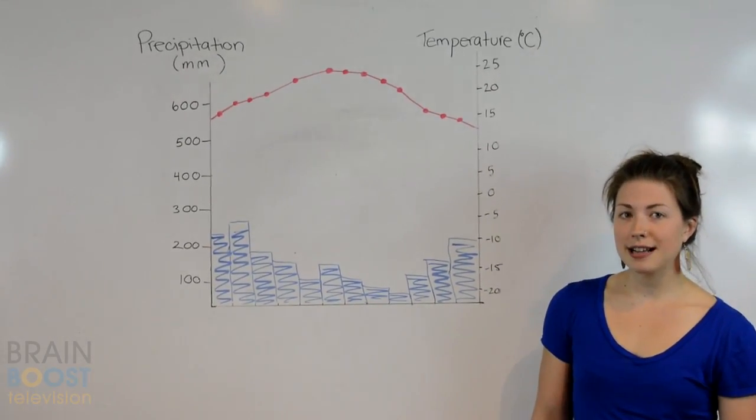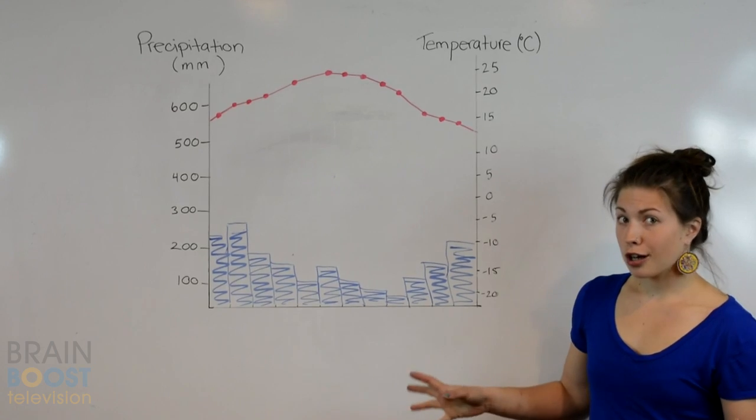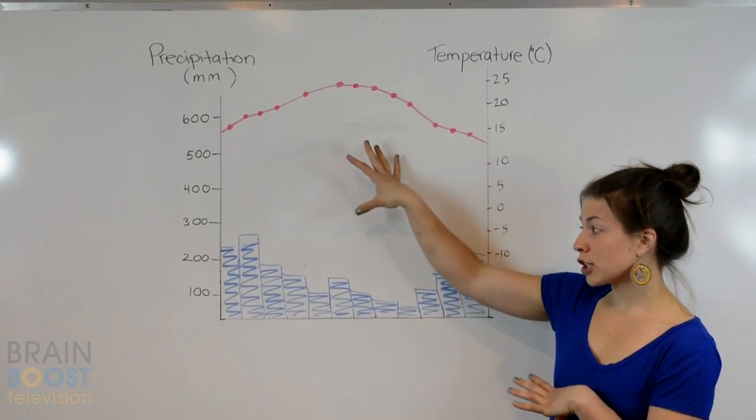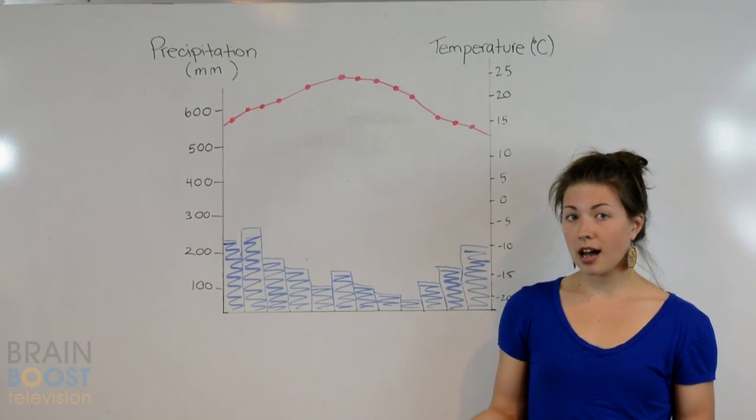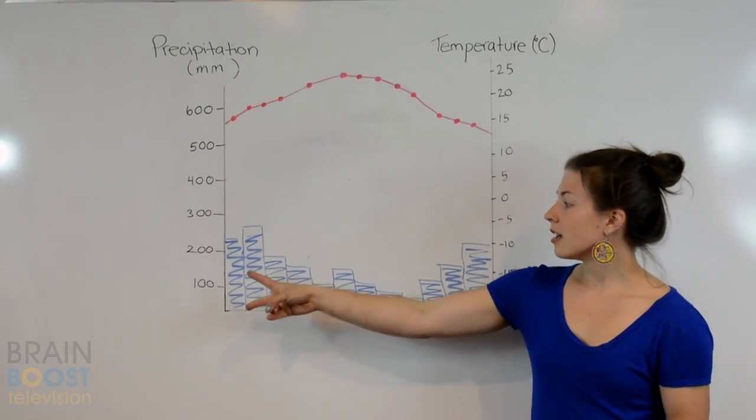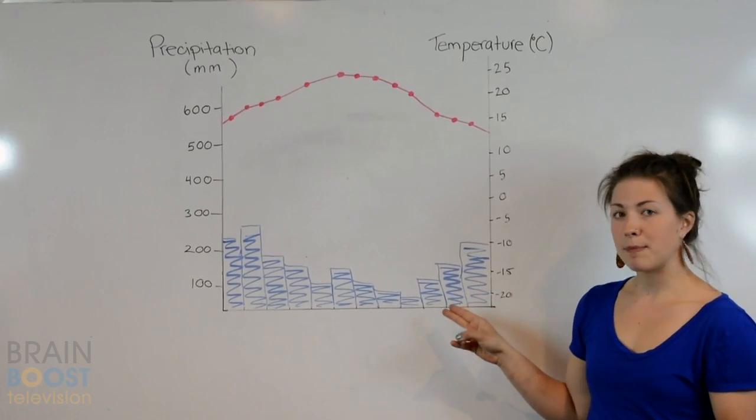Tip number two, reading climatographs. Not sure which one of these is temperature or precipitation? All you've got to remember, when you pour water into a cup, the water goes to the bottom. These bars here represent precipitation.